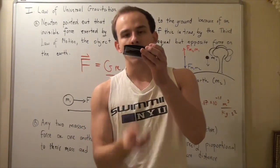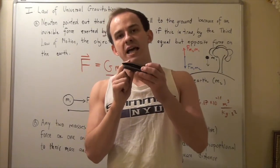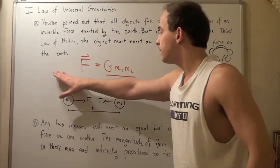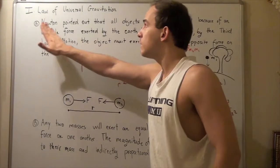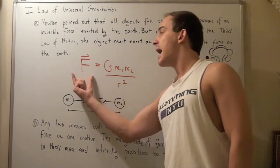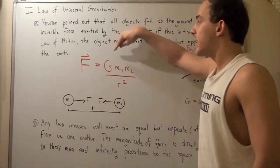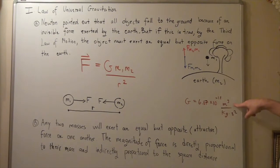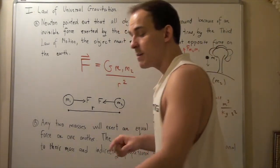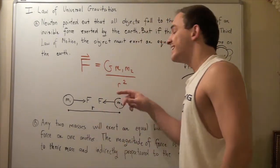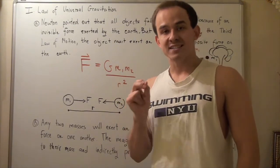The earth pulls down on my wallet, pulling it this way, and the wallet pulls the earth upward. The magnitude of my force is given by the following equation — that is known as the law of universal gravitation. This equation states that to find the magnitude of my force, I simply take my gravitational constant G, which is 6.67 times 10 to the negative 11 meters cubed divided by kilograms times seconds squared, multiplied by mass 1 — the mass of my wallet — multiplied by mass 2 — the mass of the earth — divided by the distance between their center of masses.